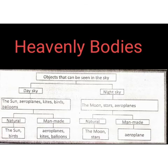Now let's see what are the objects you can see during the nighttime. The objects visible during the nighttime are the moon, stars, and aeroplanes. These objects can also be divided into natural and man-made objects. Natural objects are the moon and the stars, while man-made objects visible in the night sky are aeroplanes.